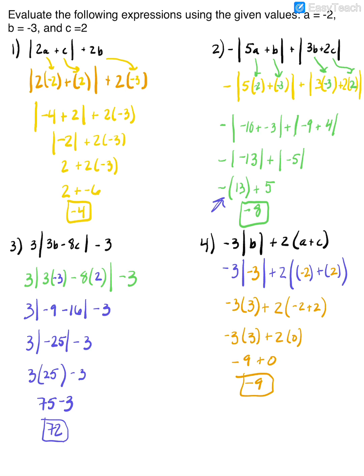Hopefully you understand that when dealing with absolute values, the answer you get out of the absolute value should always be positive, because you're talking about distance, not the opposite. Also, be aware of things in front of absolute value bars — that means you'll be multiplying, like the negative sign in problem 2 and the 3 and negative 3 on the last two. And remember to follow your order of operations correctly, or you won't get the right answer.